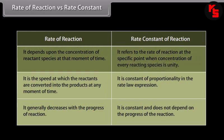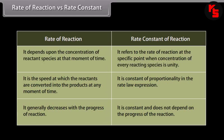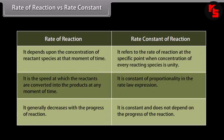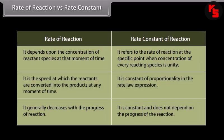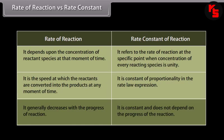Rate of reaction depends upon the concentration of reactant species at that moment, while rate constant refers to the rate when concentration of every reacting species is unity. Rate of reaction is the speed at which reactants are converted into products at any moment, while rate constant is the constant of proportionality in the rate law expression. Rate of reaction generally decreases with the progress of reaction, whereas rate constant is constant and does not depend on the progress of the reaction.